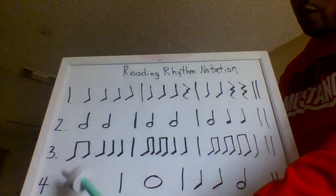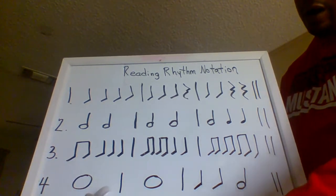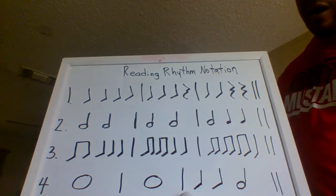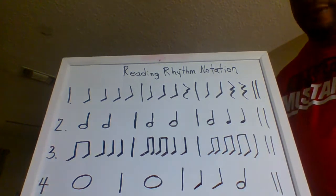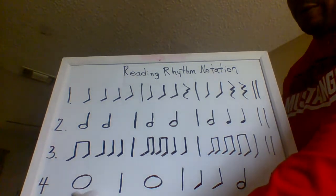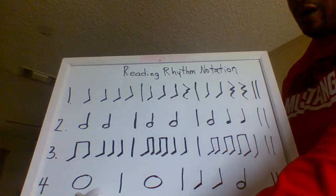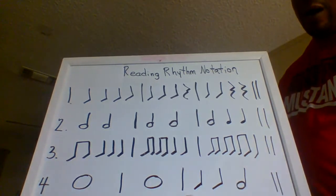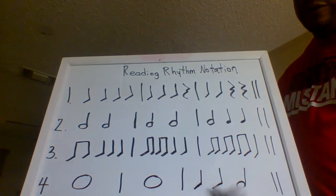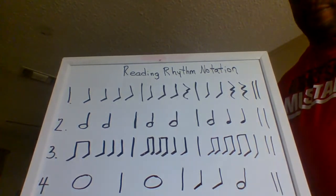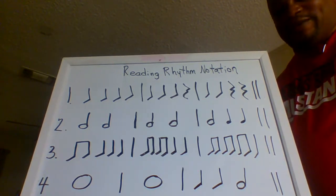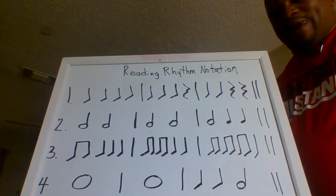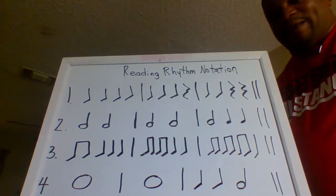Ready — line four: one, one, two, three. Let's repeat line four: one, two, ready, and play: one, one, one, one, two, three. Keep practicing your rhythms, go over this some more, get familiar with it, and we'll record more later and put them online for your reading exercise. Thank you.